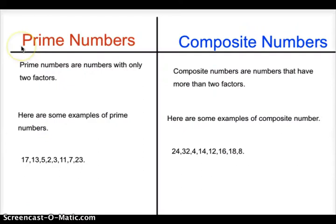You're probably wondering what prime numbers and composite numbers are. Prime numbers are numbers with only two factors. Here are some examples of prime numbers: 17, 13, 5, 2, 3, 11, 7, and 23 all only have two factors.